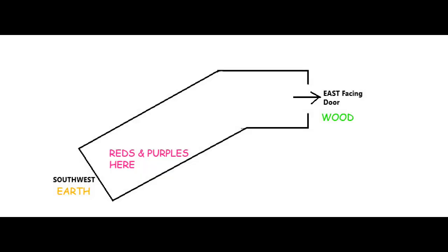Balancing an unusual space can also be done by judging the relationship of the different areas to the main doorway in a different way. As shown in this diagram, you will notice the element of the doorway and then that of the area of the axis of the door. The element of the east-facing doorway is wood, and at the southwest area it is earth. Wood and earth are out of harmony. To balance them, you need fire. Therefore, reds and or purples should go in the southwest area.